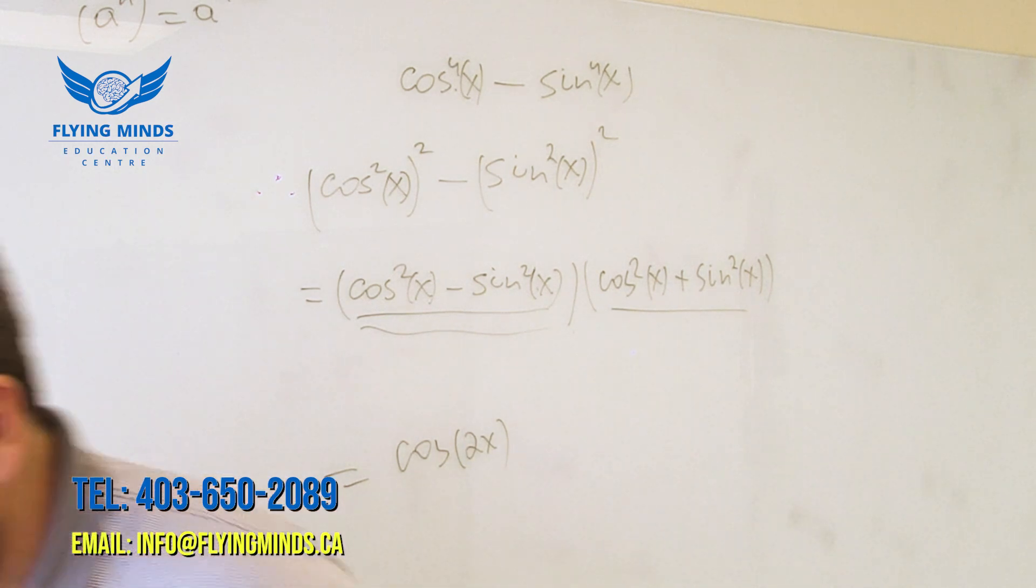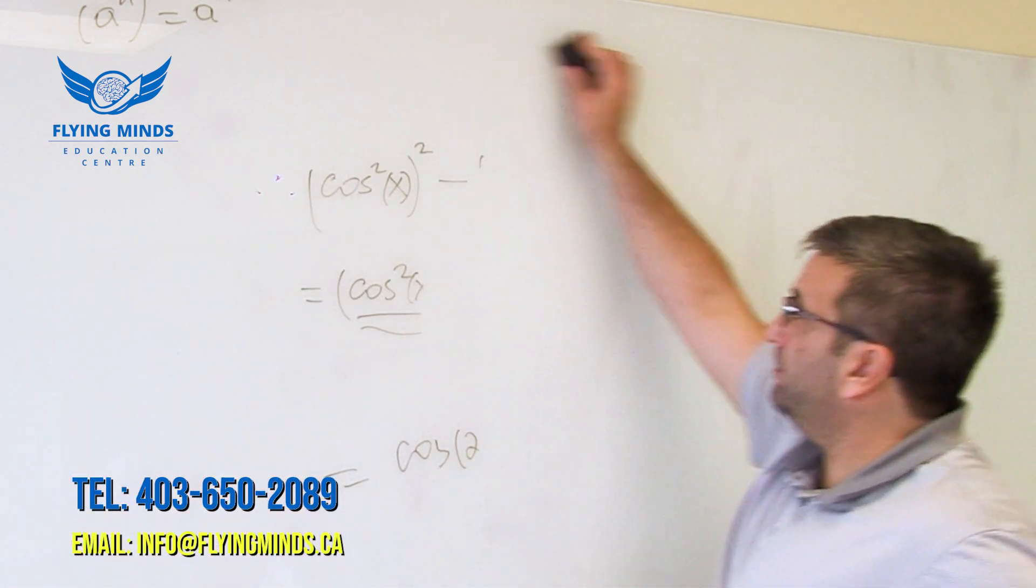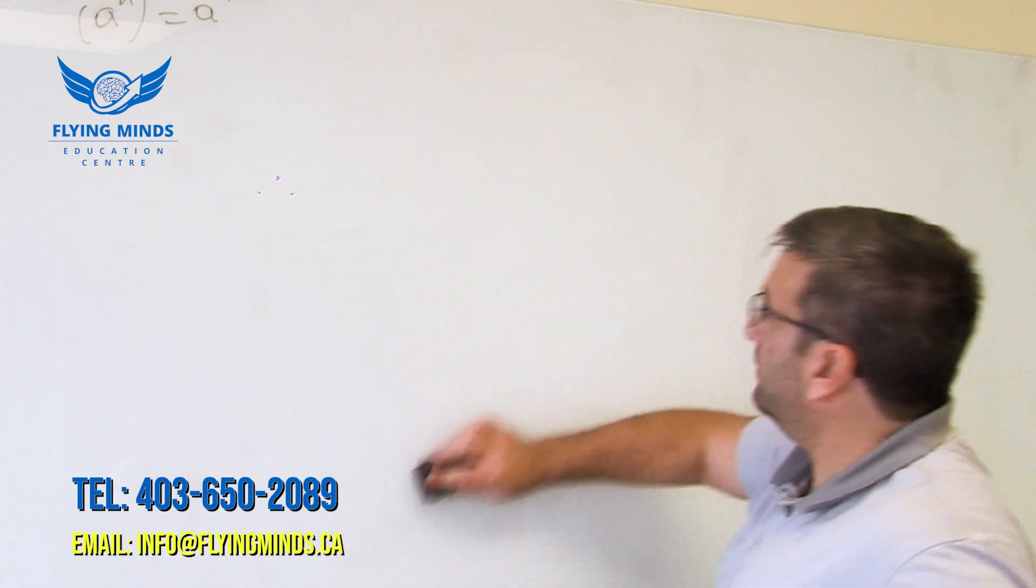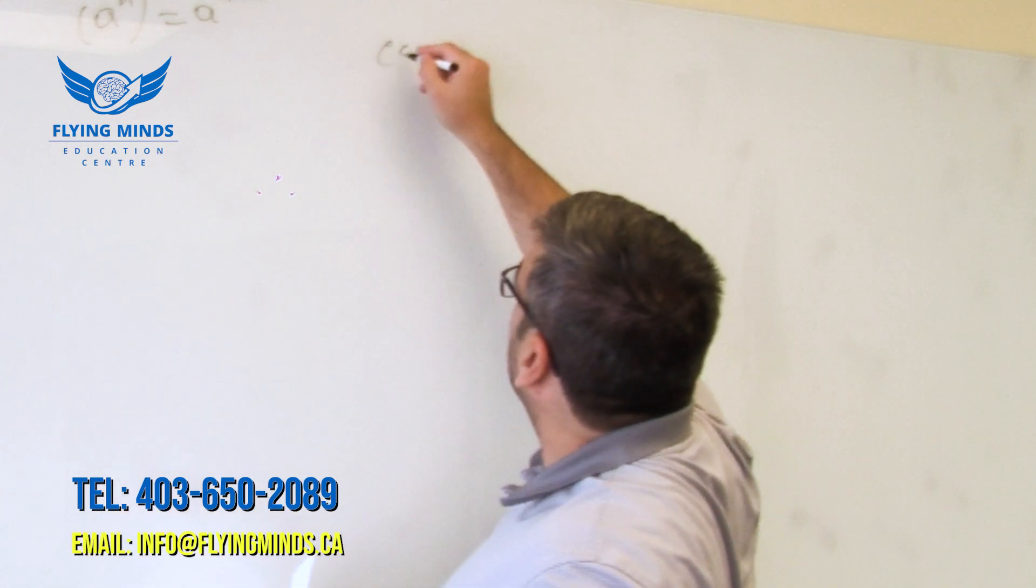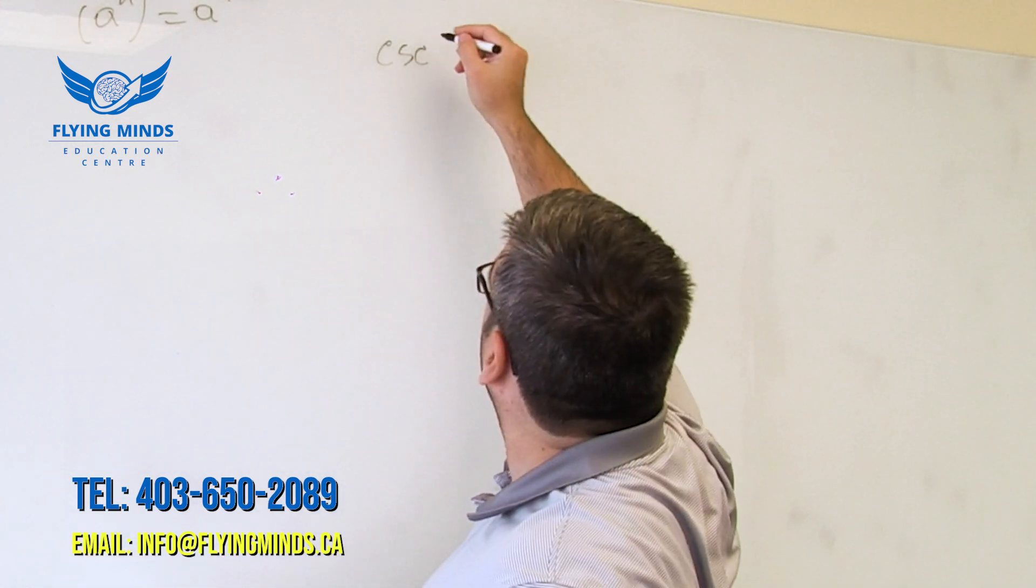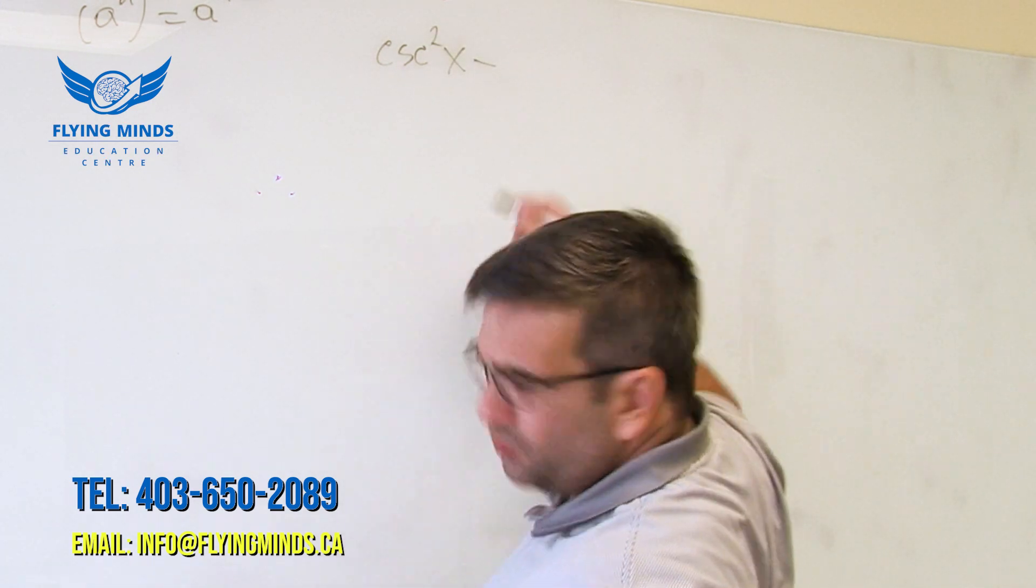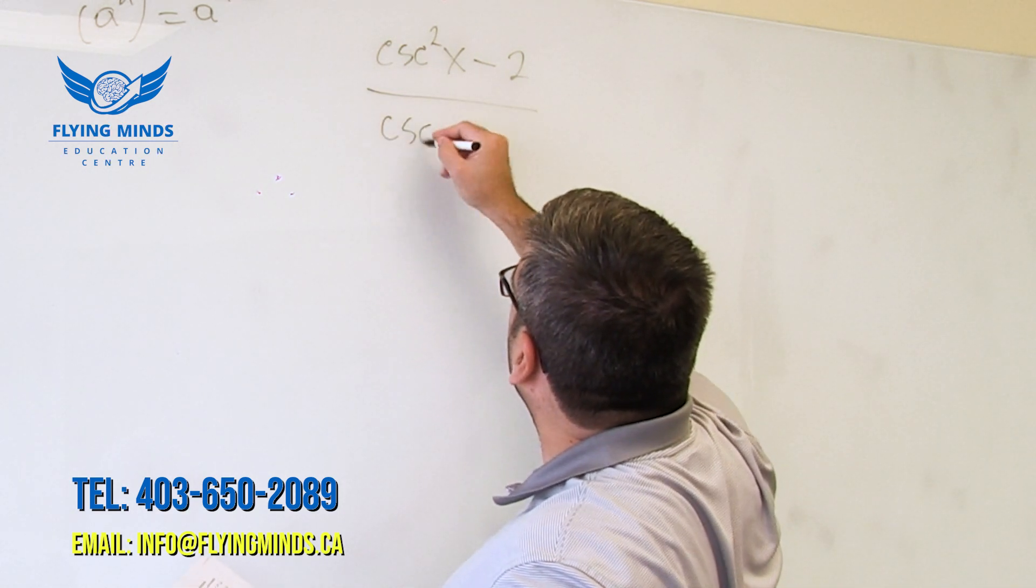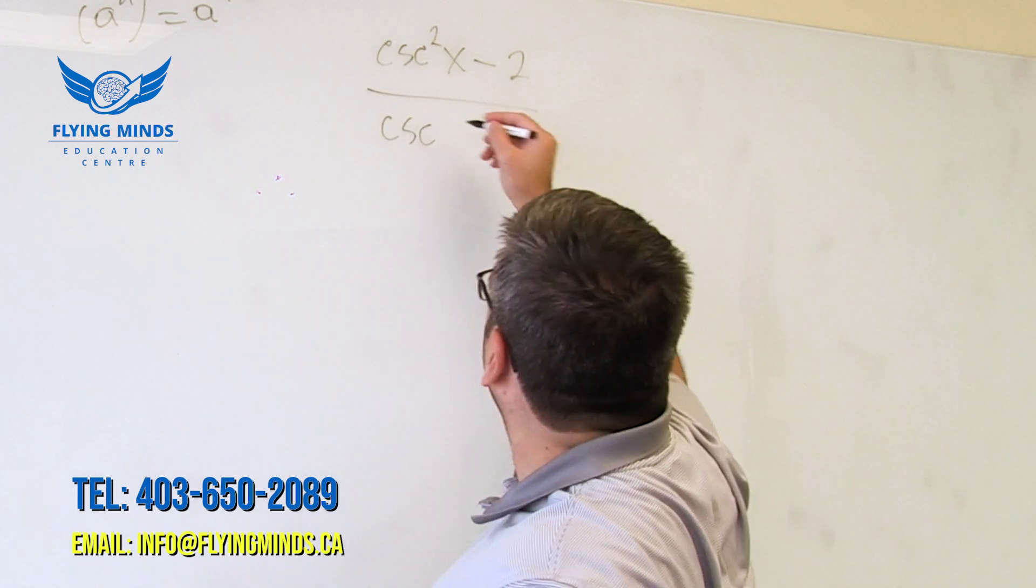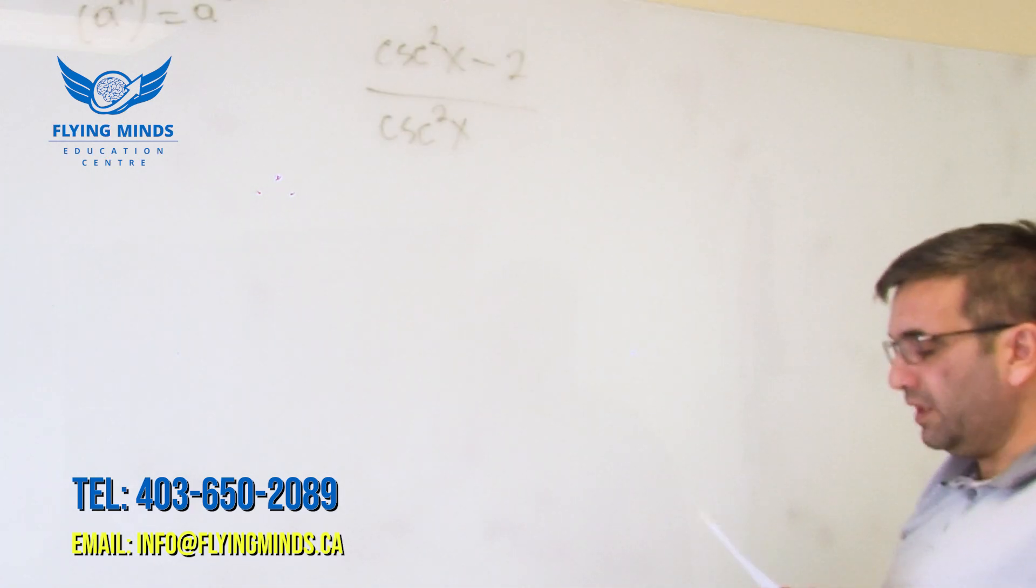Let's do the next exercise. Part B. So we have cosine squared x minus 2 over cosecant squared x. Okay. So what can we do here?